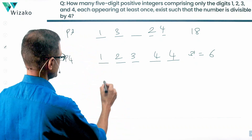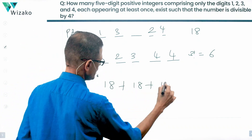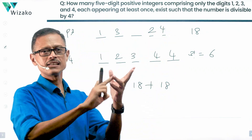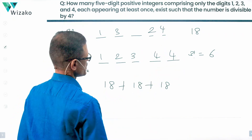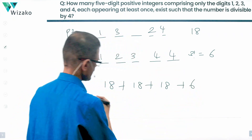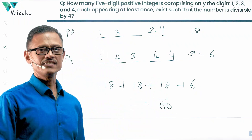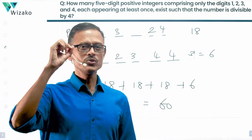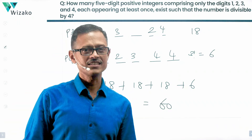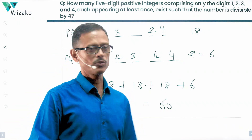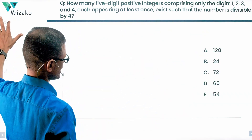So, possibilities 1, 2, 3 give 18 each — 18+18+18 — when the rightmost 2 digits are 12, 32, or 24. And when the last 2 digits are 44, we have 6 such possibilities. 54+6 = 60 such 5-digit positive integers exist which use the digits 1, 2, 3, 4 at least once, formed only using these digits, such that the numbers are divisible by 4. Let's look at what answer option makes sense. Choice D is the correct answer.